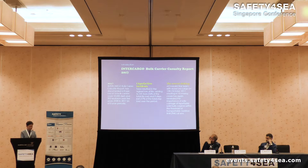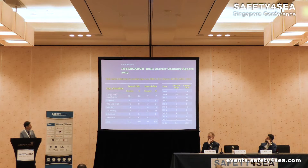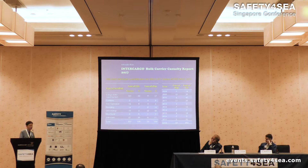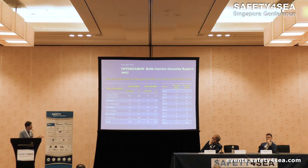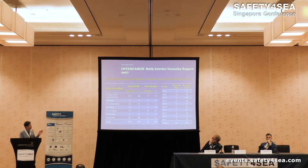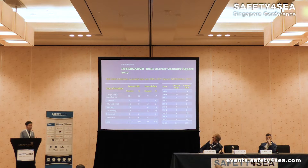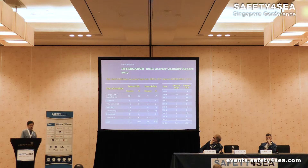Looking at the intercargo bulk carrier casualty report in 2017, we can see that cargo liquefaction caused loss of life over the 10-year period between 2008 and 2017. There was a loss of 53 vessels and lives lost in total for all kinds of incidents, but cargo liquefaction resulted in 50% of the total incidents. In 2017 alone, two vessels were lost and 32 lives were lost in the bulk carrier industry, with 10 lives lost as a result of suspected cargo liquefaction — that vessel was the Emirates Star.